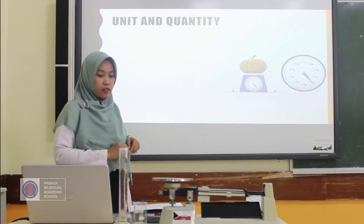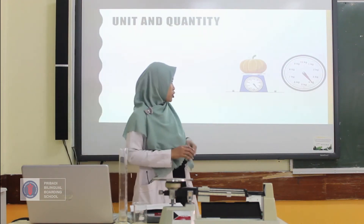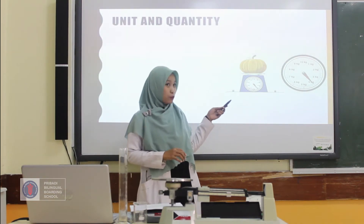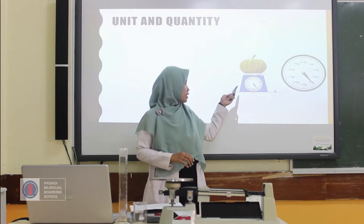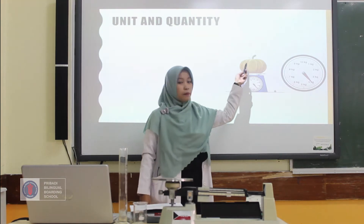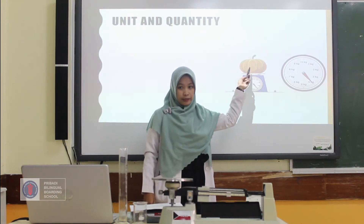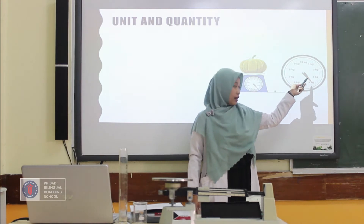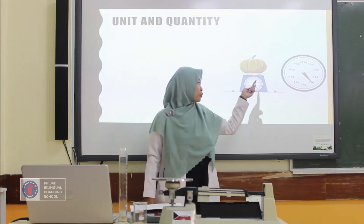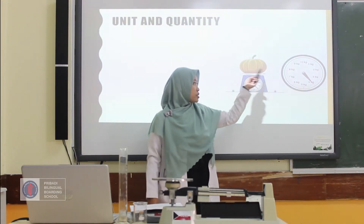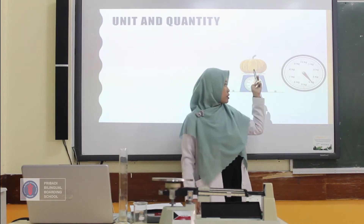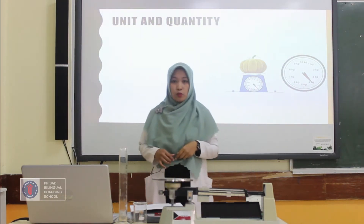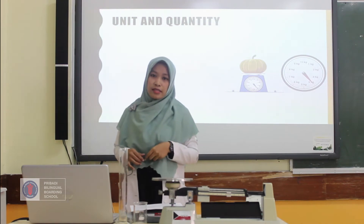Now let's check. From this picture, you can see a scientist using a tool to measure the mass of a pumpkin. Here is the measurement data — this is the data obtained from a measurement. For example, the mass of a pumpkin is 4 kg. Kilogram is the unit, and mass is the quantity.